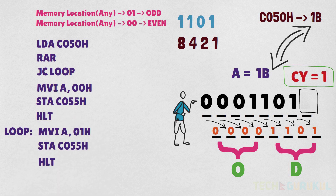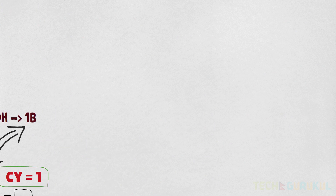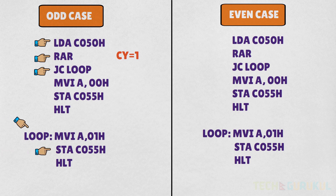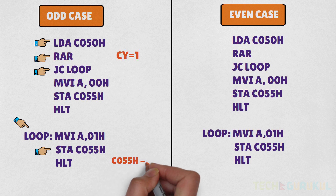For the even case, the result is 00. For the odd case, in the accumulator when the last digit is 1 — that is an odd number — the carry flag becomes 1. In the loop, we write A as 01. In C055H, the value 01 is stored. This is how we handle the odd case.